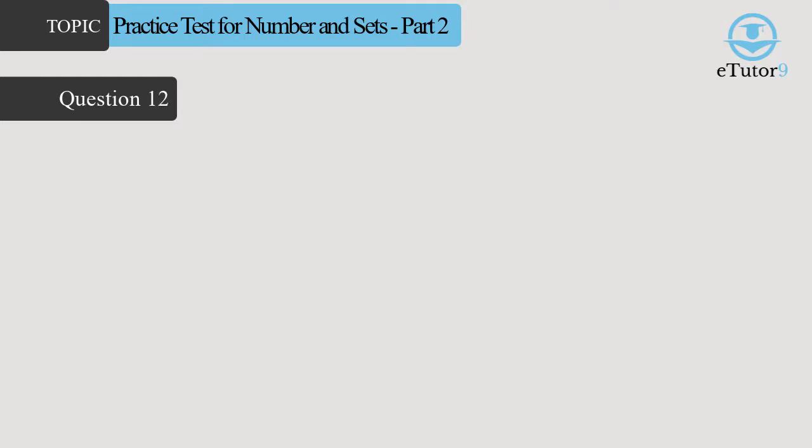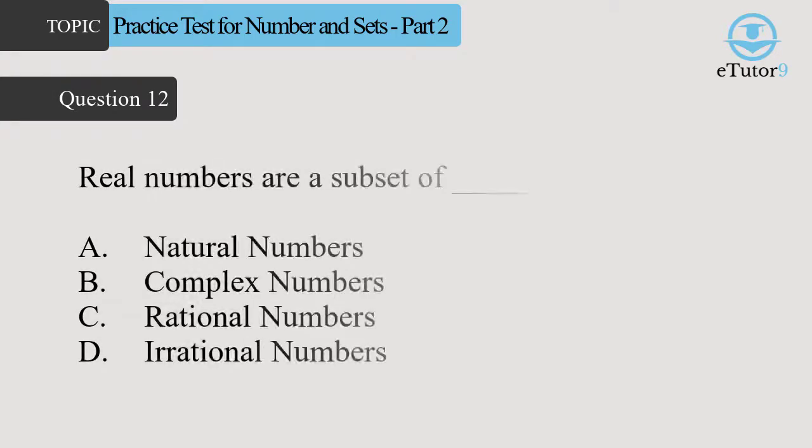Real numbers. Question 12. Real numbers are a subset of blank. Answer is D. Complex numbers.